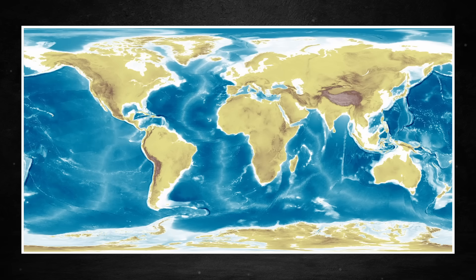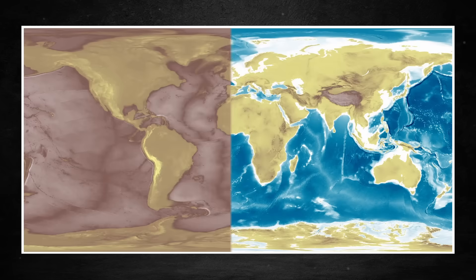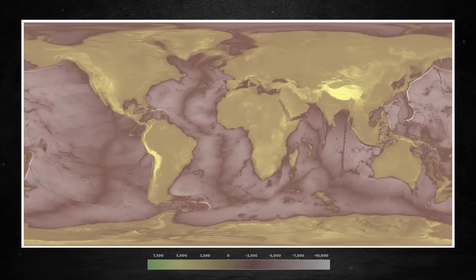However, it is a bit misleading because I use different color gradients for the land and the ocean. This is what it looks like when they are not separated.